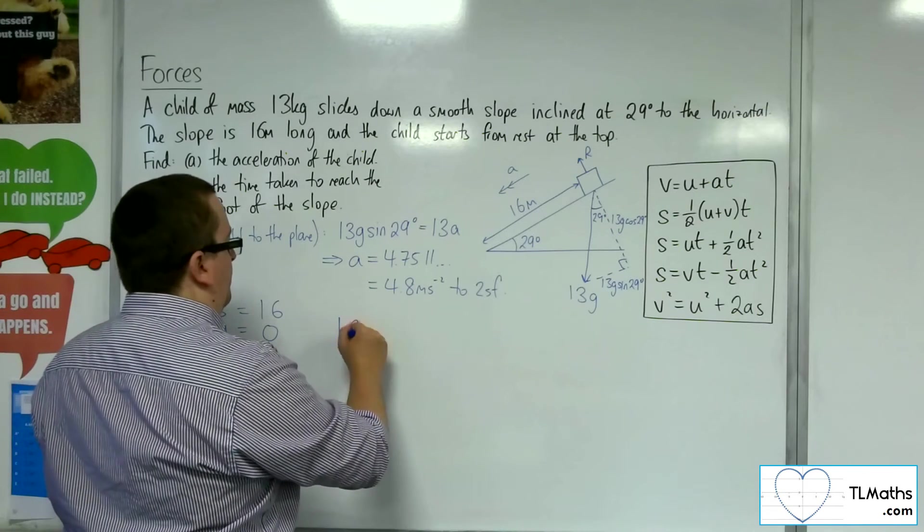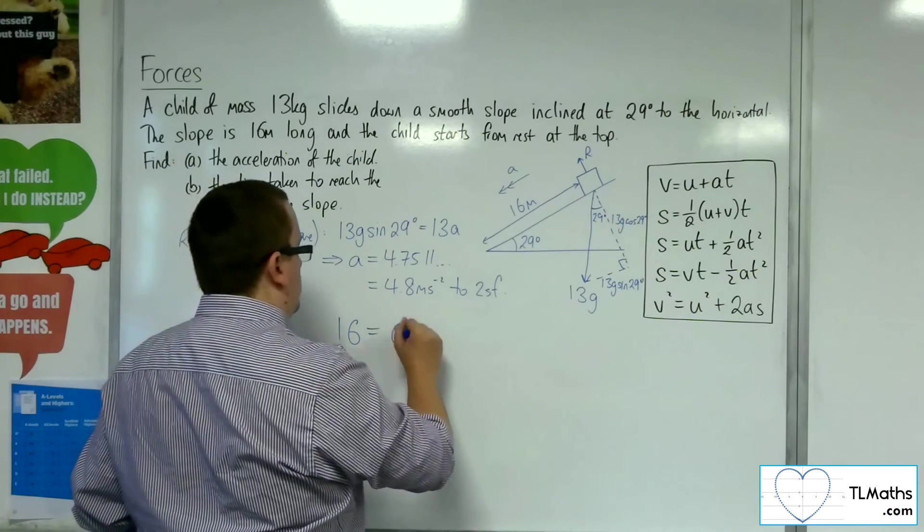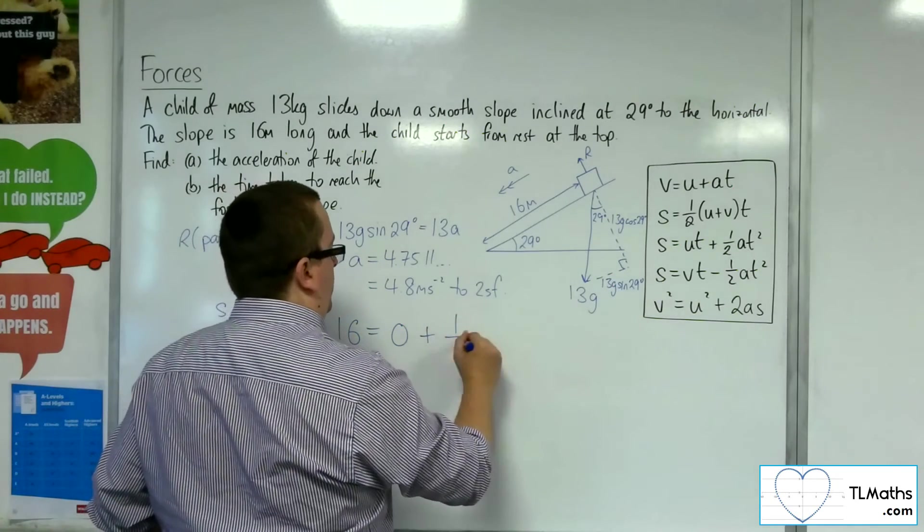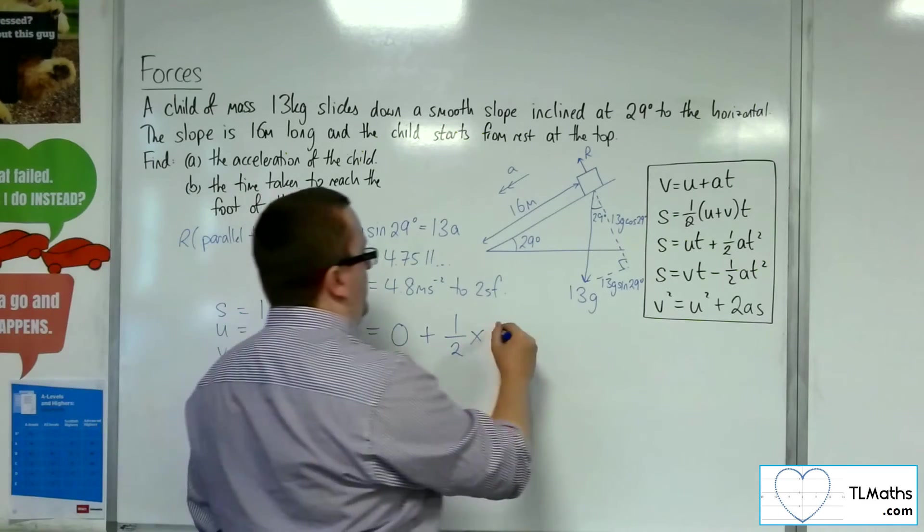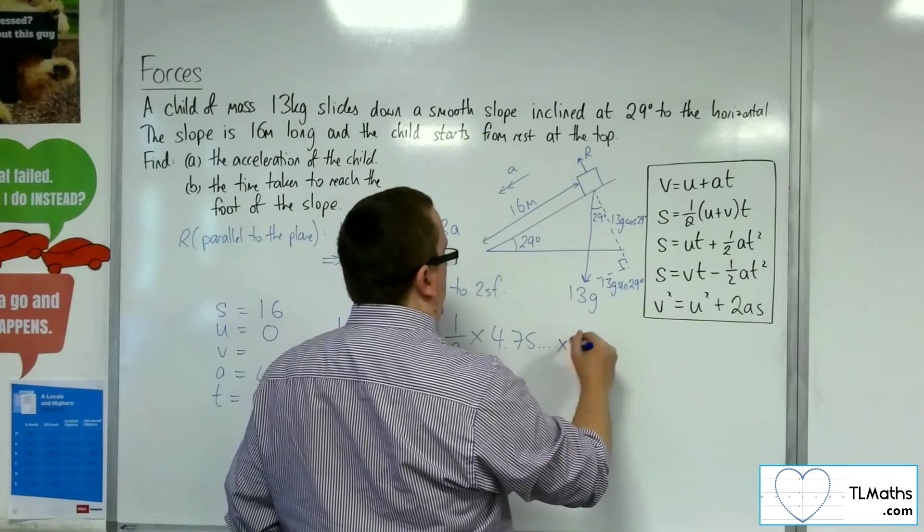So S is equal to U times T, so 0, plus 1 half times the 4.75, etc., times T squared.